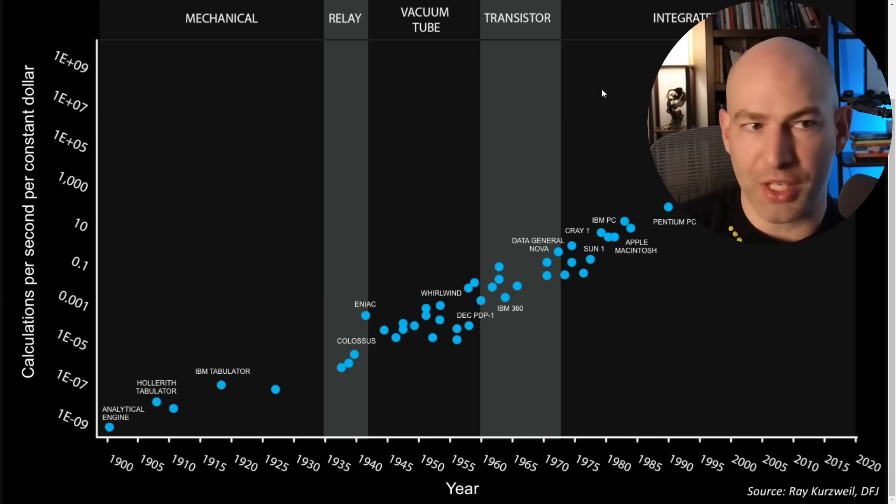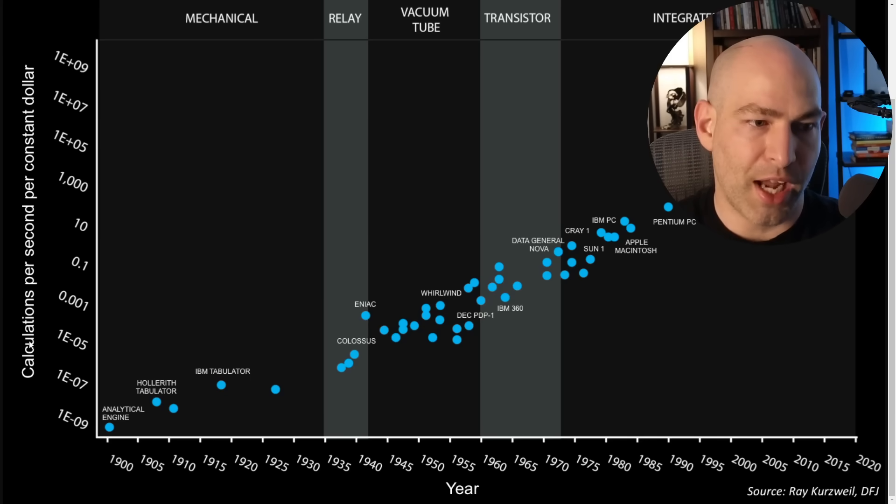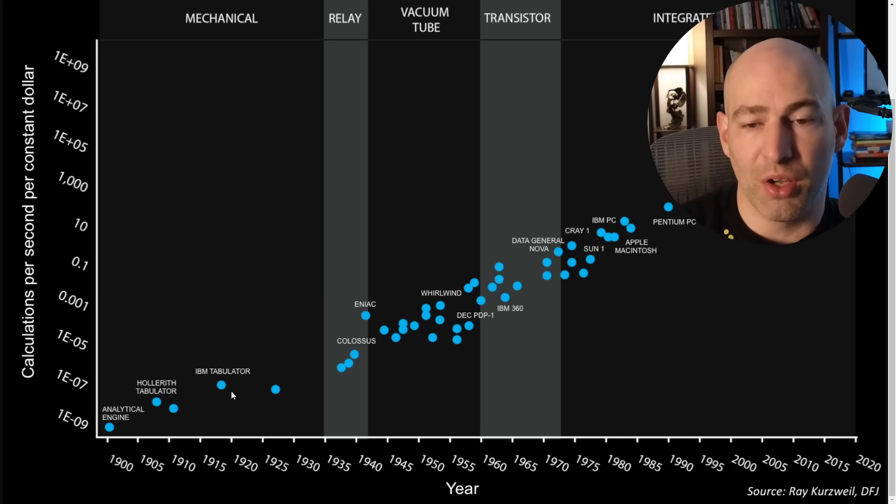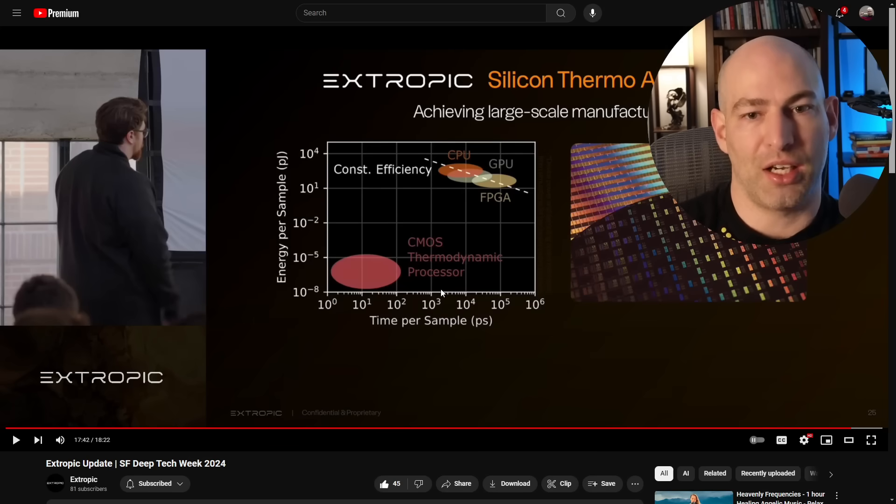So this goes up to 2020, and you look at the calculations per second per constant dollar. That's one way of looking at it. You can also look at the calculations per watt. I don't have that chart brought up, but it looks basically the same, is that the number of calculations per watt energy has also been going up exponentially.